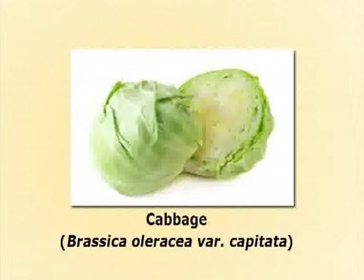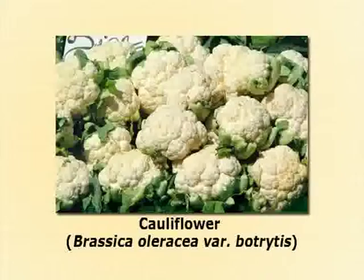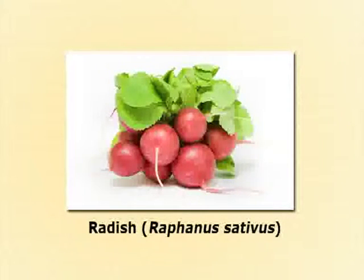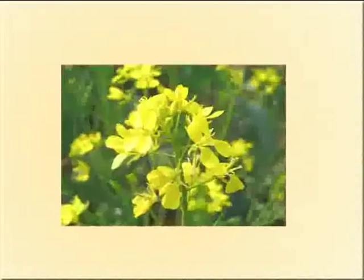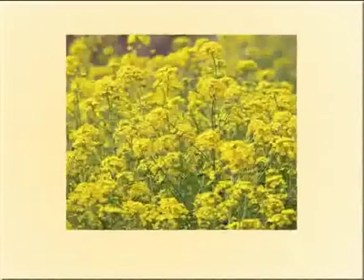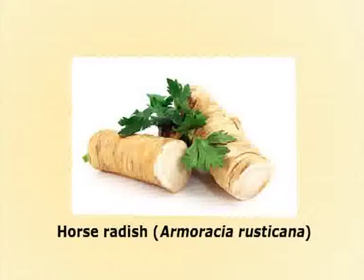The members of the family Brassicaceae are of huge economic importance, as the family contains many important vegetable crops consumed in our daily lives. These include cabbage (Brassica oleracea var. capitata), cauliflower (Brassica oleracea var. botrytis), turnip (Brassica rapa), and radish (Raphanus sativus). Many members are also a source of condiments such as Chinese mustard (Brassica juncea), black mustard (Brassica nigra), white mustard (Sinapis alba), and horseradish (Armoracia rusticana).